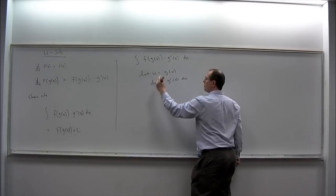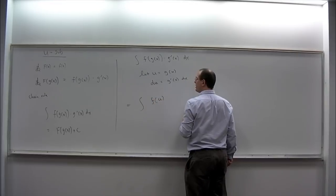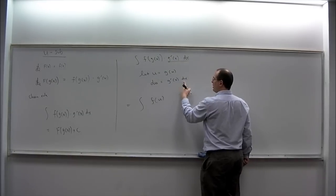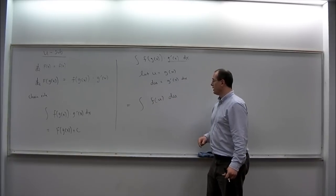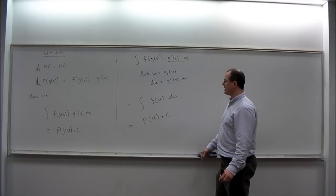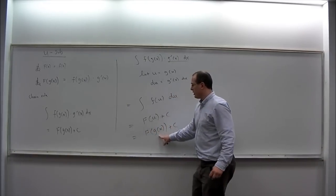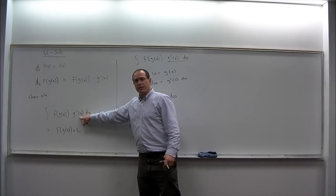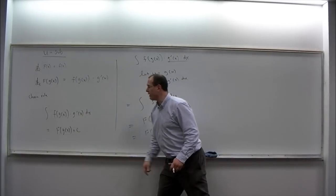We can now transform the original integral into an integral in the variable U. It will be the integral of F of U — U is substituting in for G of x — and then G prime of x dx is DU. So we get a new integral, the integral of F of U DU. The antiderivative of little f is capital F, so this is capital F of U plus C. The final answer is obtained by back-substituting U equals G of x, giving F of G of x plus C. This is a process to get from the left side to the right side through a series of small steps.